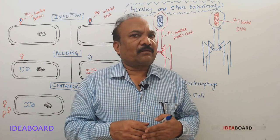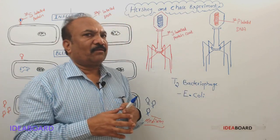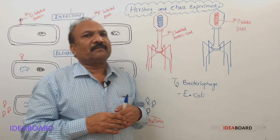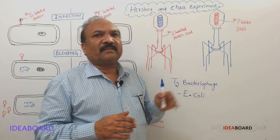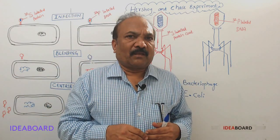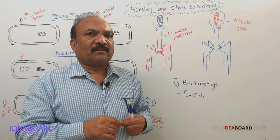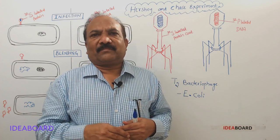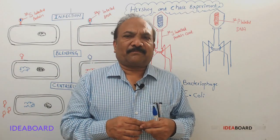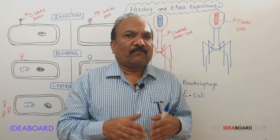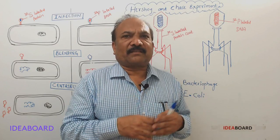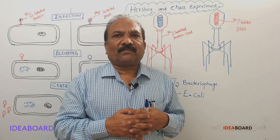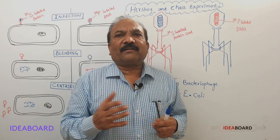There are only two chemicals present. What happens when this bacteriophage infects E. coli? The bacteriophages multiply inside the bacterium. To find out which part of the virus entered into the bacterium — whether it was protein or DNA — they conducted these experiments using radioisotopic materials.